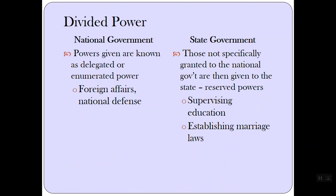They divided power between the national government and the state government. Powers given to the national government were delegated or enumerated — literally numbered in the Constitution, Article 1 Section 1, Article 1 Section 2 — and dealt with things like foreign affairs and national defense. The state government had reserved powers: those not specifically granted to the national government were given to the states, such as supervising education and establishing marriage laws and procedures.